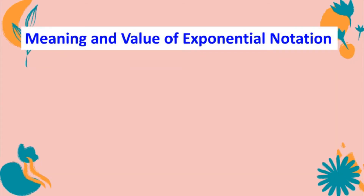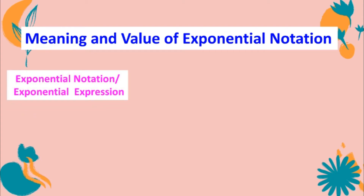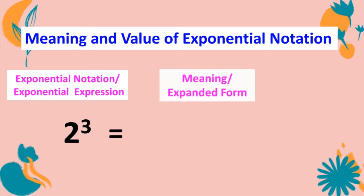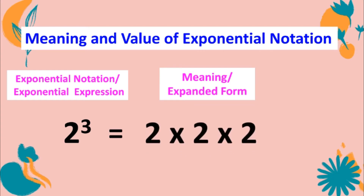Meaning and value of exponential notation. We have 2 to the third power. The meaning and expanded form is 2 times 2 times 2 — it is multiplied three times. The value or the answer is 8, because 2 times 2 is 4, times 2 is 8.